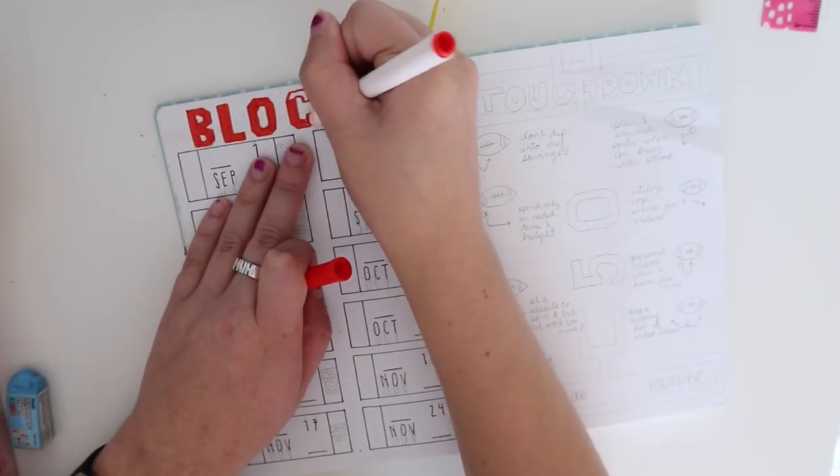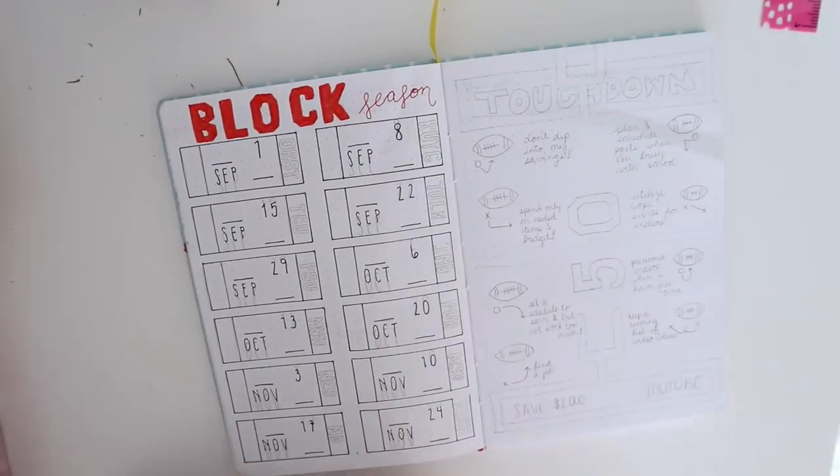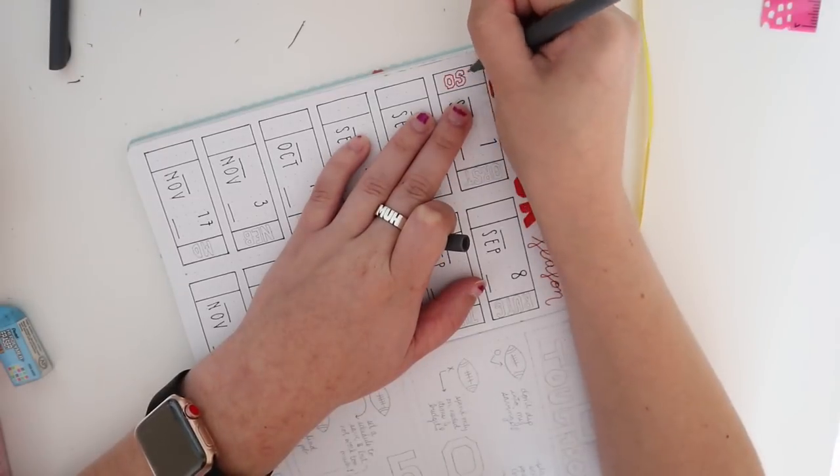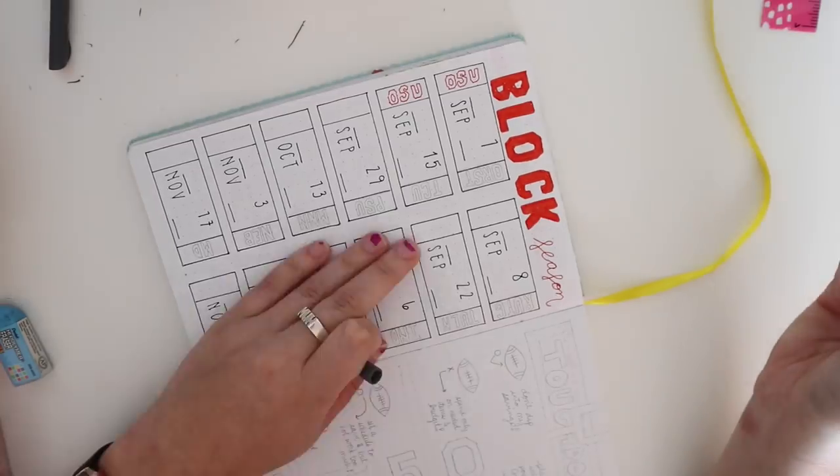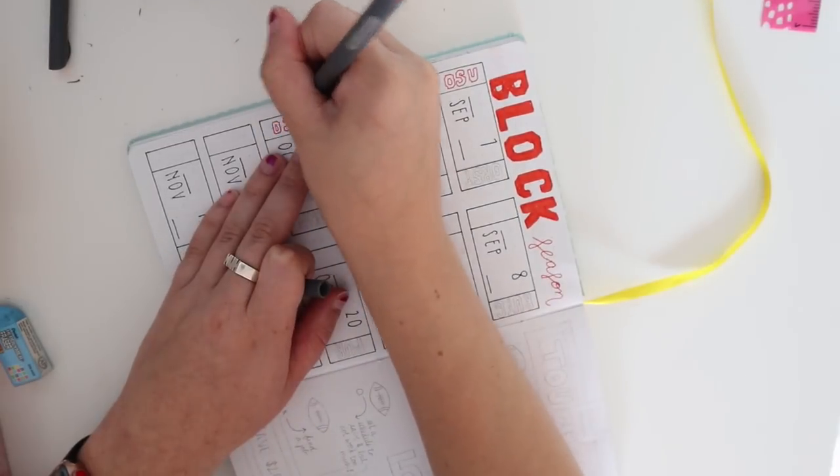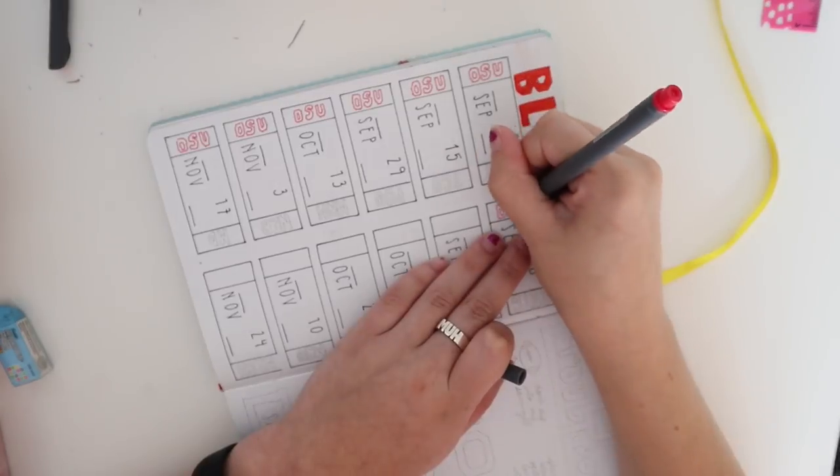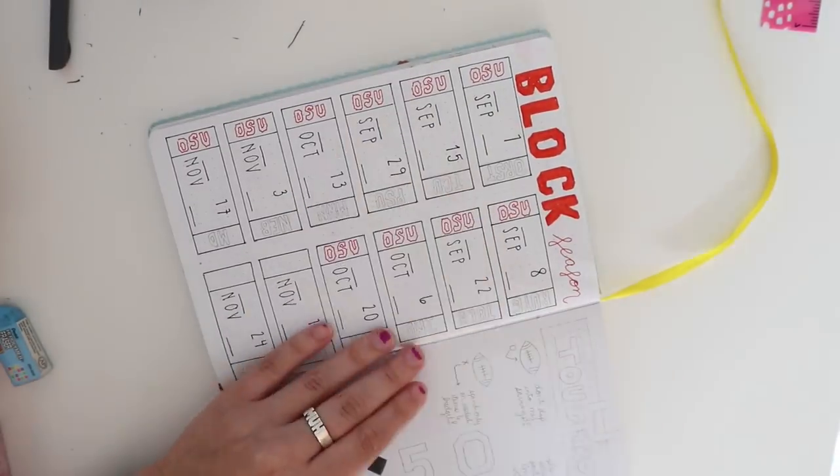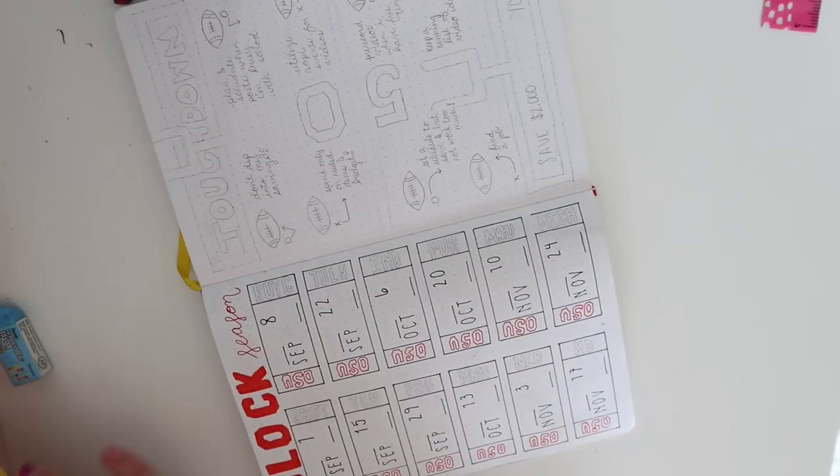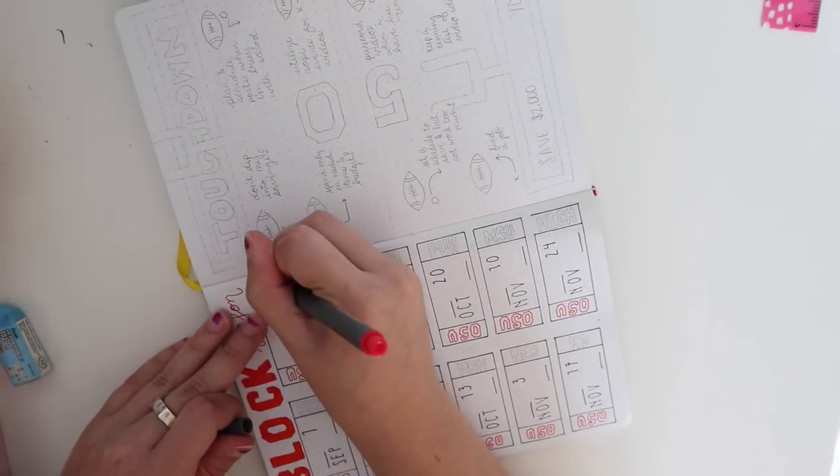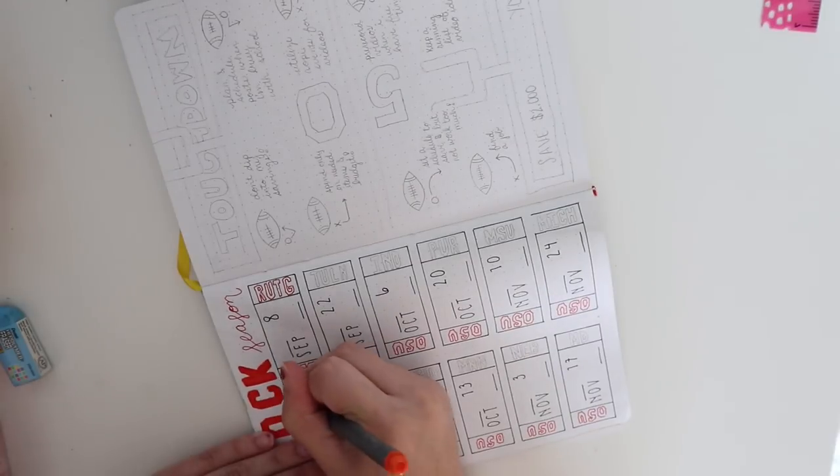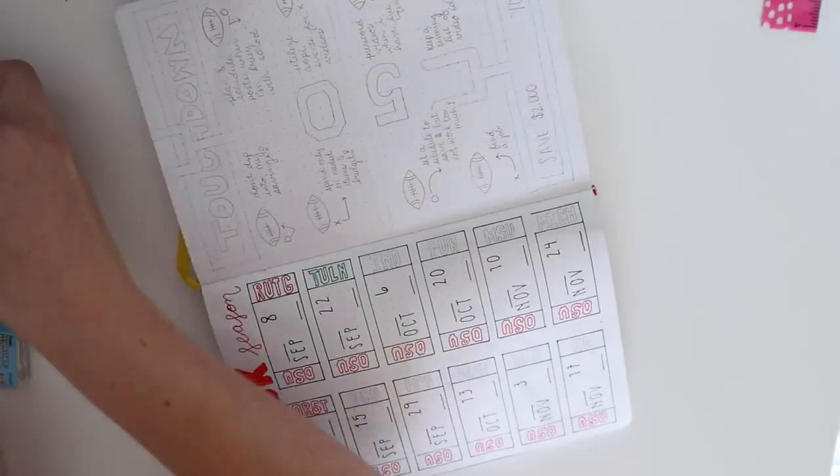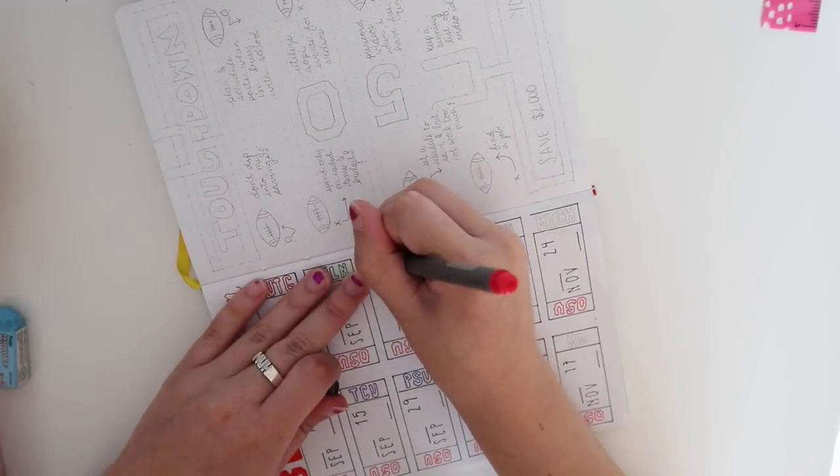If you don't go to OSU you might not know what block season means, but block is basically the parties that happen before game days. Since this is kind of a game day tracker page I of course had to call it block season. On the left side of the tickets I did write OSU because of course that is my team, and on the right side of the tickets I did fill it in with the teams that we will be versing. I decided to make it more fun by filling in each team with their respective colors that way this page is kind of colorful as well as informational.